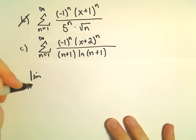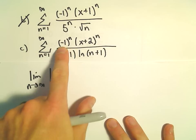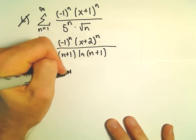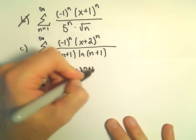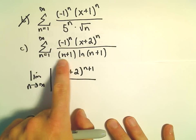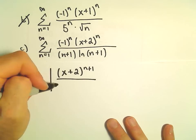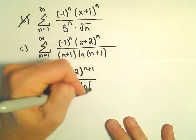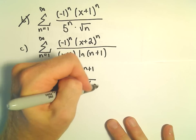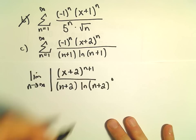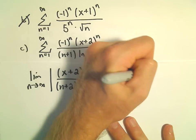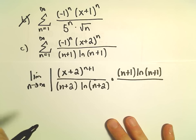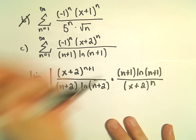We've got the limit as n goes to infinity. The alternating part — the negative 1 to the n — when we put that in absolute value, we can just drop that. So we have x plus 2 raised to the n plus 1 power. We'll replace n with n plus 1, so we'll be left with n plus 2, and the natural logarithm of n plus 2. Then in the numerator, when we flip and multiply, we'll have n plus 1 times the natural logarithm of n plus 1, all over x plus 2 raised to the n power.